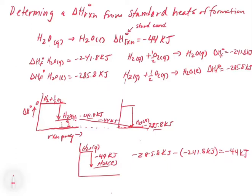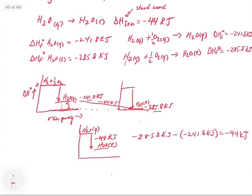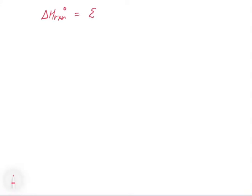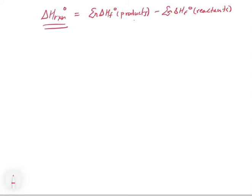We can define a general equation: ΔH°rxn = Σ[n × ΔHf°(products)] − Σ[n × ΔHf°(reactants)], where n is the number of moles of each species. We're finding where all products sit relative to zero, where all reactants sit relative to zero, and taking the difference. That difference is our ΔH of reaction — exactly what the H₂O example demonstrated.